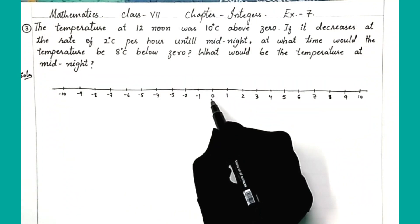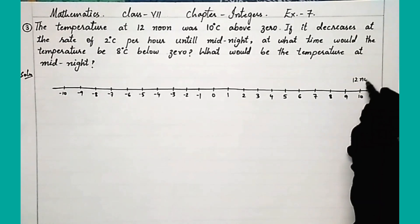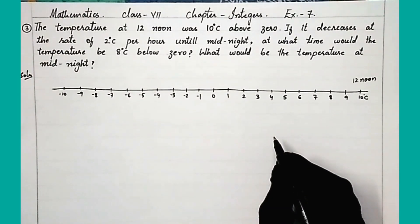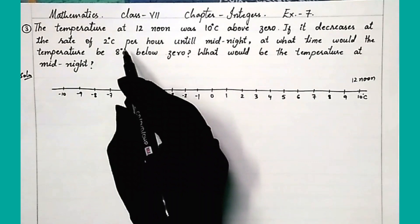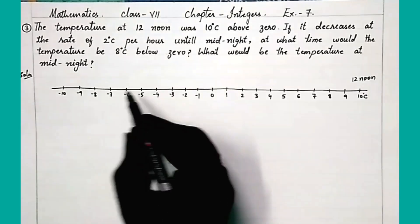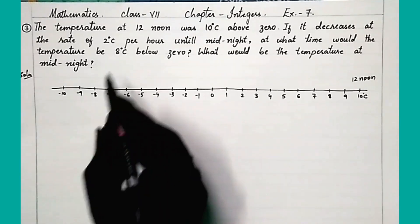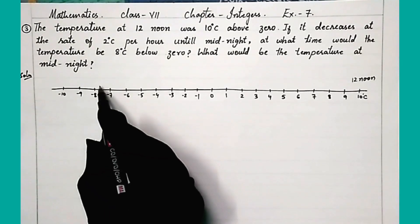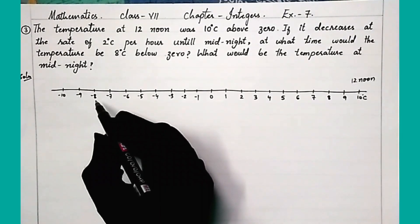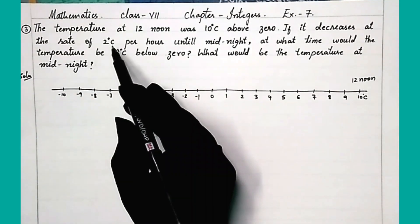On the number line, here is zero. Above zero means the positive side. At 12 noon the temperature is 10 degrees Celsius. If it decreases at the rate of 2 degrees Celsius per hour until midnight, we need to find when it hits 8 degrees Celsius below zero. Below zero is the negative side, so that means it will be minus 8.